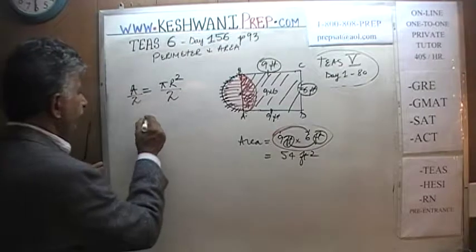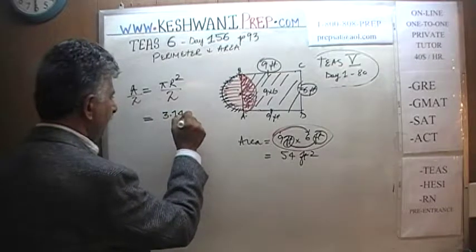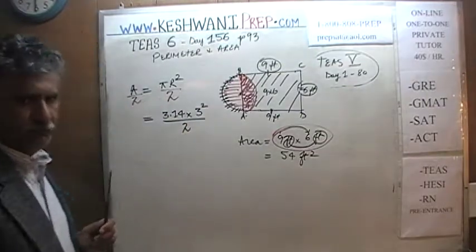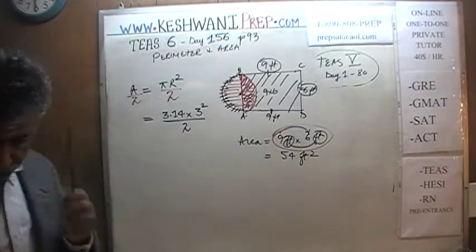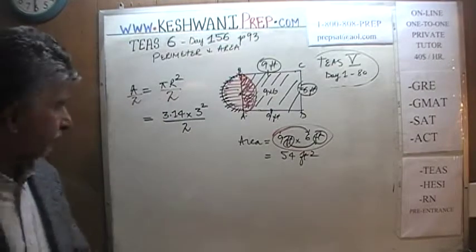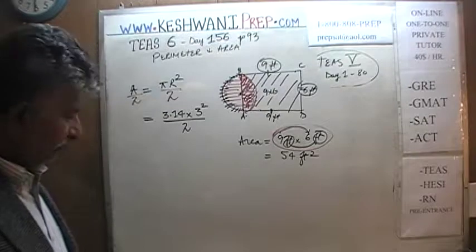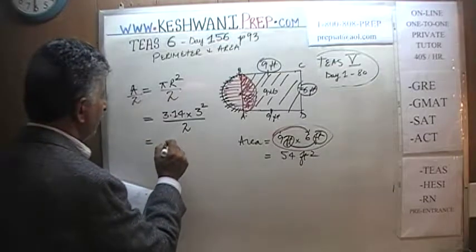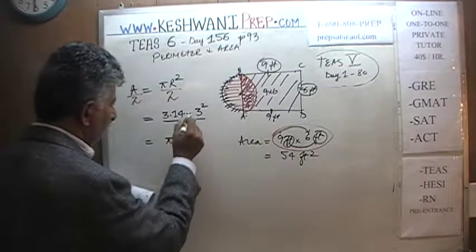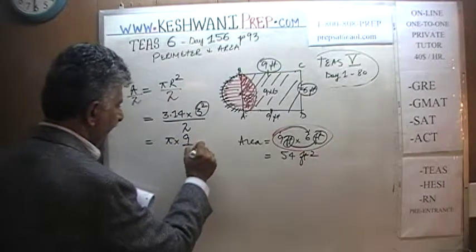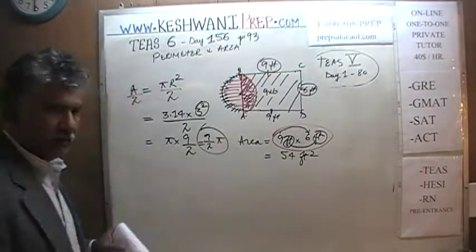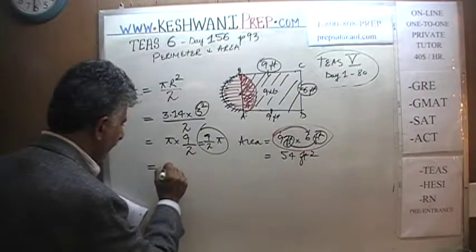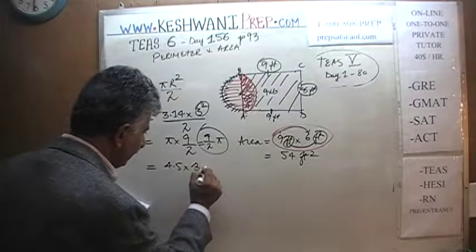So: pi which is 3.14, times r squared which is 3 squared, over 2. We can say 3 squared is 9, so this becomes 9π over 2. Or we can say 9 divided by 2 is 4.5, so it's 4.5 times pi which is 3.14. Let's do 4.5 times 3.14.